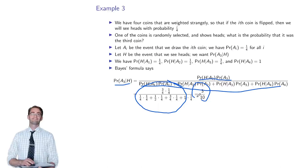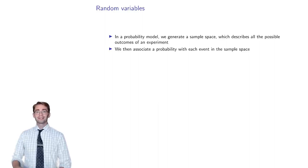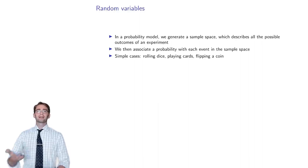Let's next talk about random variables. When you make a probability model of some phenomenon, you generate a sample space that describes all the possible outcomes of an experiment. Rolling a single die gives outcomes one through six; rolling two dice and summing gives two through twelve. With each outcome you associate a probability — the probability of rolling a seven with two dice is six out of 36, or one-sixth.